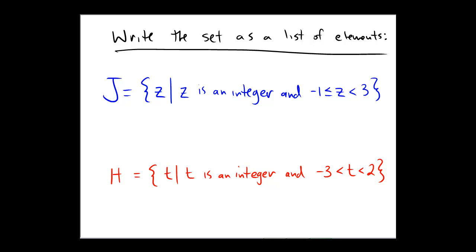So I did J, J is equal to, now this is read as the set of Z's such that, this vertical line is such that Z is an integer. It means no decimal, no fraction. And negative 1 is less than or equal to Z is less than 3.